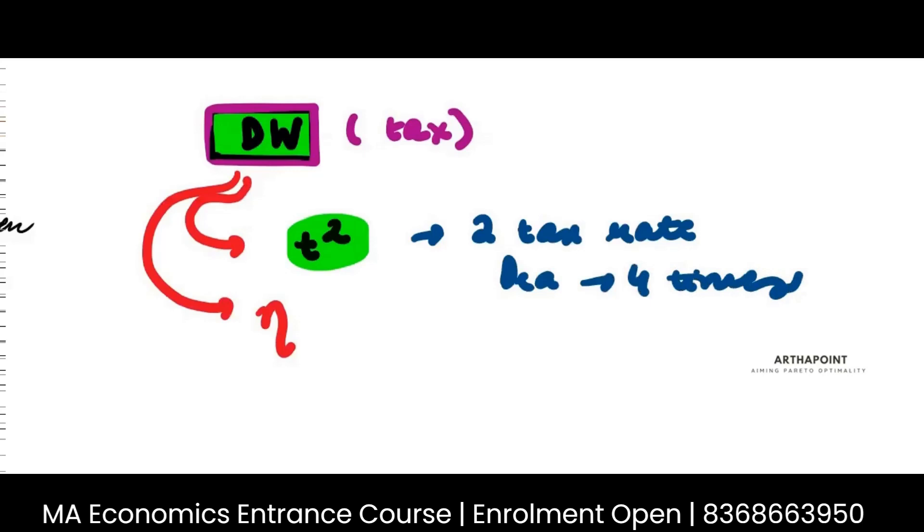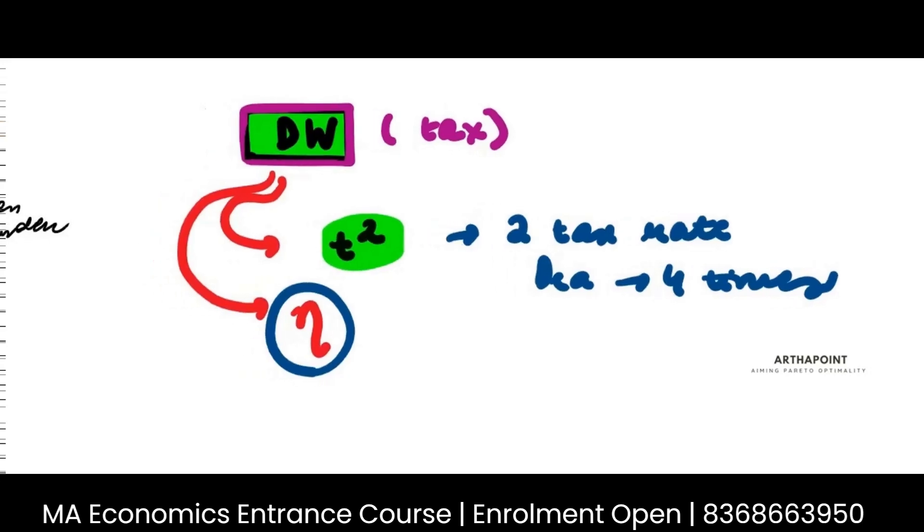So, tax is that much impactful for the deadweight loss and then it definitely depends on how elastic your demand and supply is. If people don't change their demand at all when tax is imposed, then I'm fine, right? Because then I'm selling the same quantity as earlier. These are the two factors that your deadweight loss depends upon.